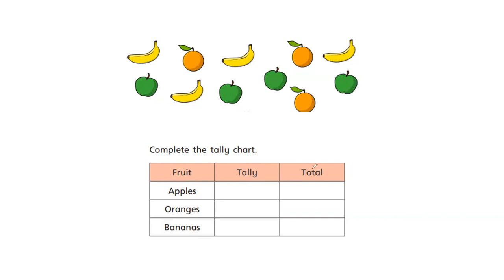Let's count together how many apples we have. We have one, two, three, four apples. So I'm going to draw one, two, three, four tally lines. And then I'm going to write my total. What am I going to write? Four.